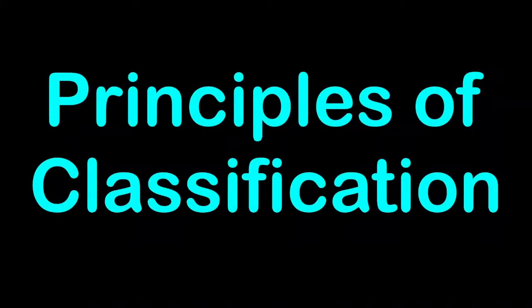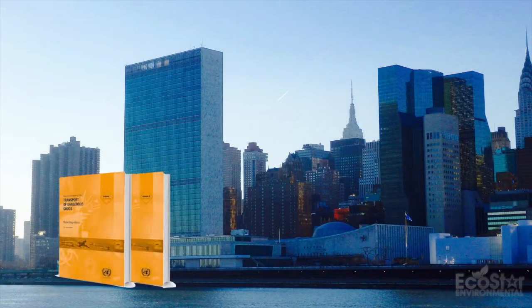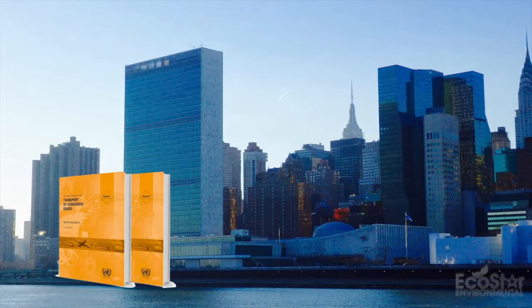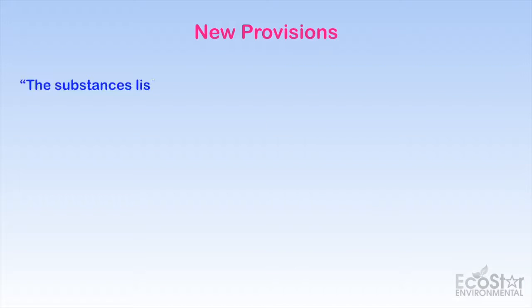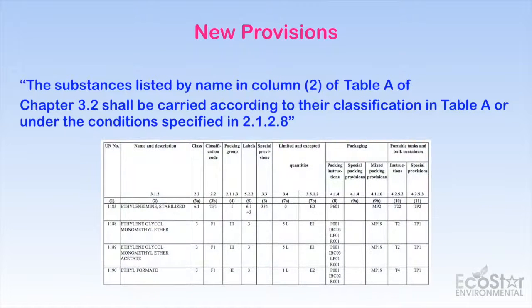Principles of Classification. From the 19th edition of the UN model regulations, to help resolve conflicts between GHS classifications and transport classifications, a clarification is introduced to ADR Chapter 2.1. The new entry confirms it is a guiding principle of the regulations that substances listed by name in the dangerous goods list shall be carried according to that entry.